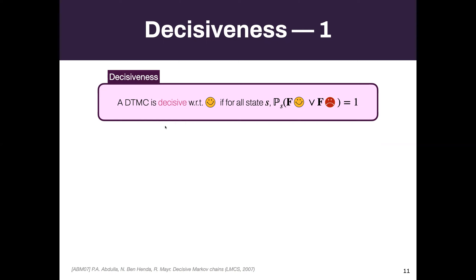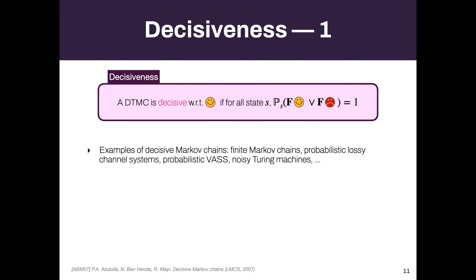There is a good property of DTMCs identified in 2007 by Abdulla, Benhenda, and Mayer: the property of decisiveness. A Markov chain is decisive if, from every state, you can either reach the good target or the trap with probability one. The unbalanced random walk was not decisive.